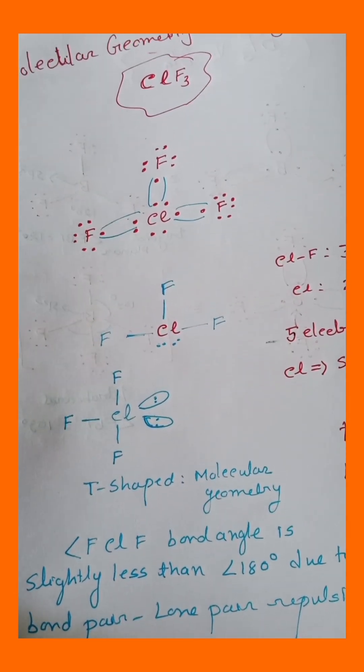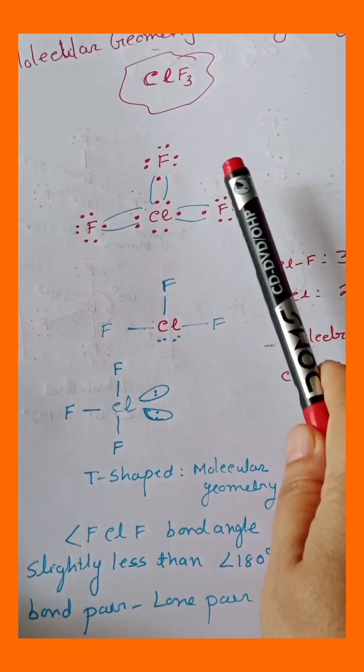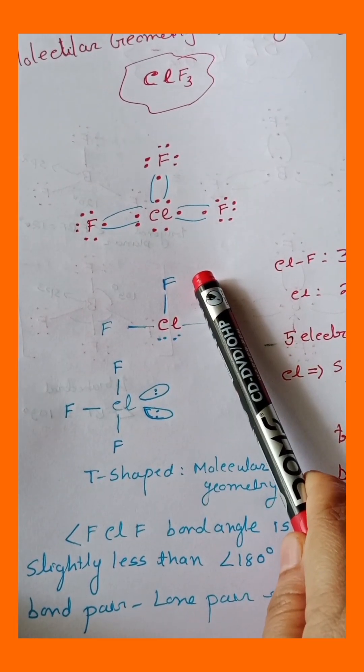Let's find out the molecular geometry and hybridization of ClF3 molecule. Chlorine and fluorine both have 7 valence electrons.